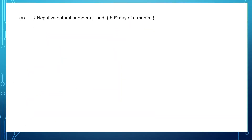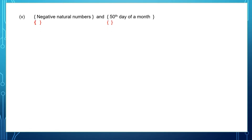Next question: negative natural numbers and the 50th day of a month. Do we have negative natural numbers? All natural numbers are positive and start from one, so the first set is an empty set. And the 50th day of a month — do we have a 50th day? No. So that is also an empty set. Both are empty sets, so they are equal sets.